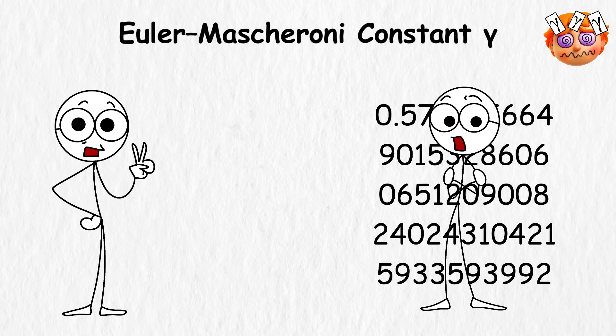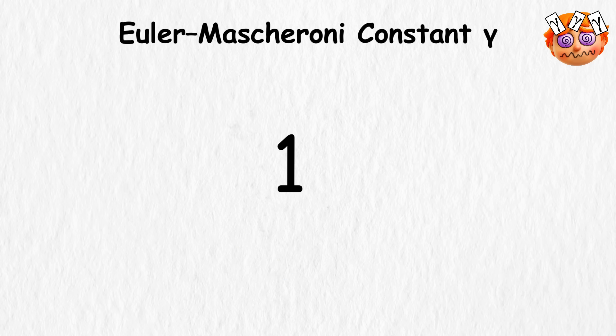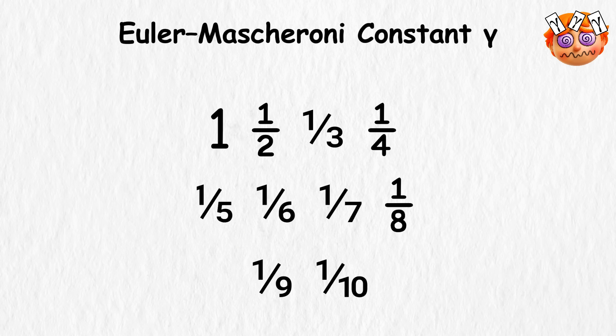Gamma comes from comparing two simple ideas, adding fractions, and taking logarithms. Imagine you add 1, plus 1 half, plus 1 third, plus 1 fourth, and you keep going like that forever.